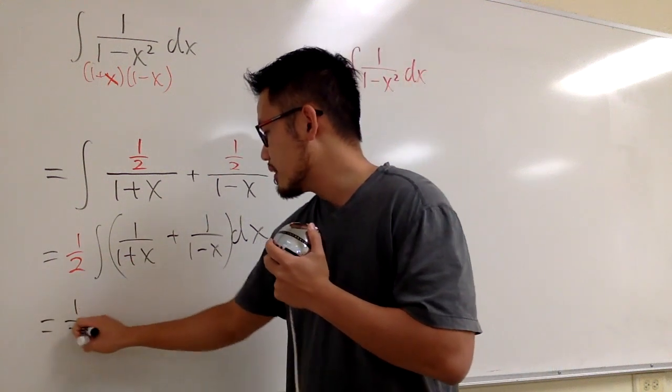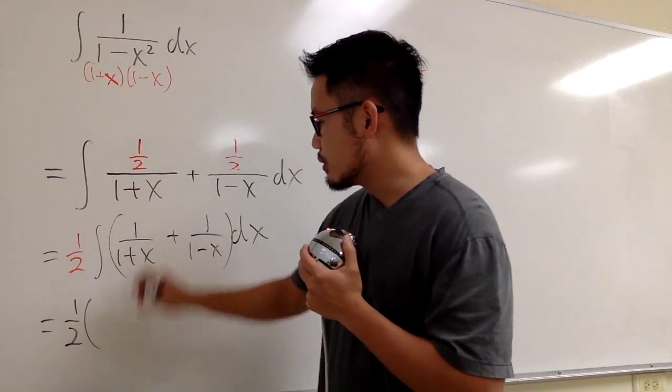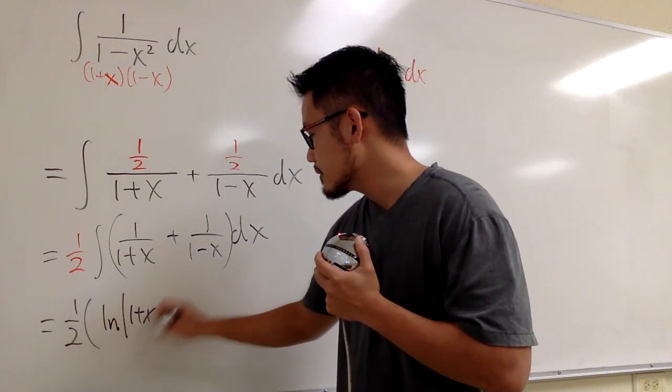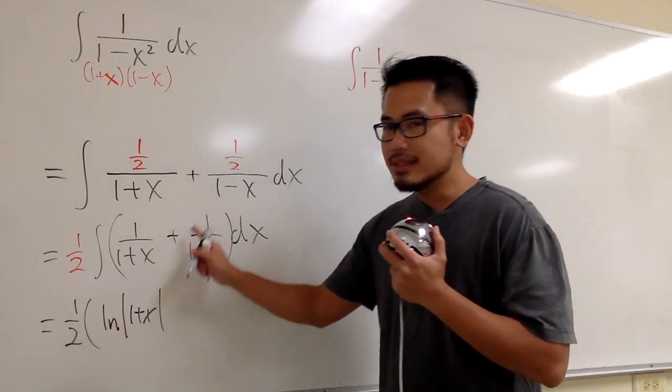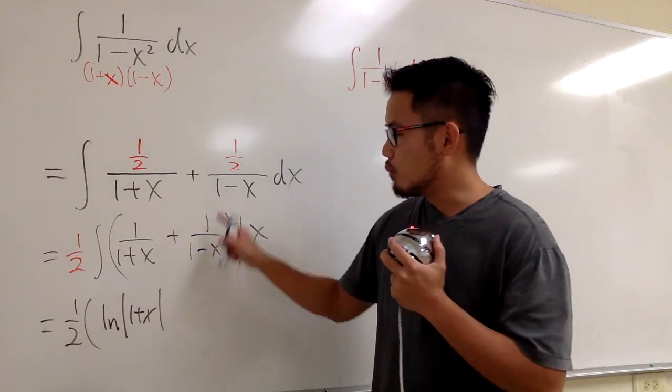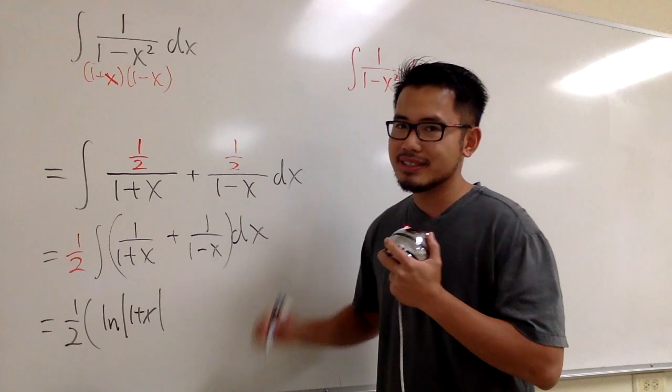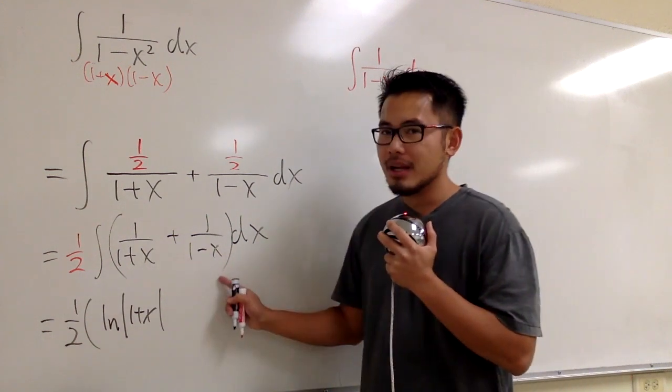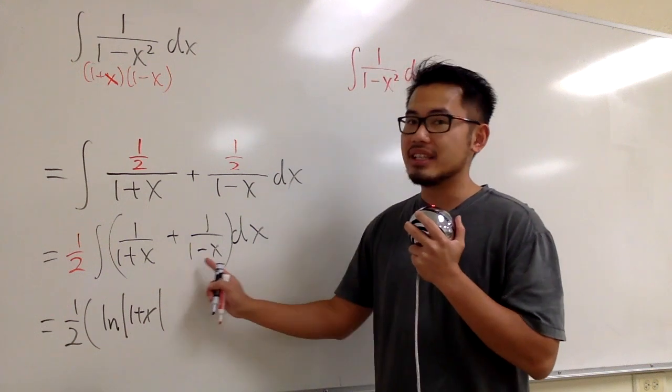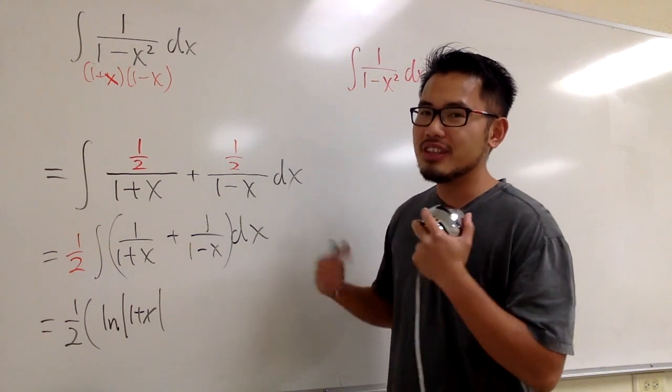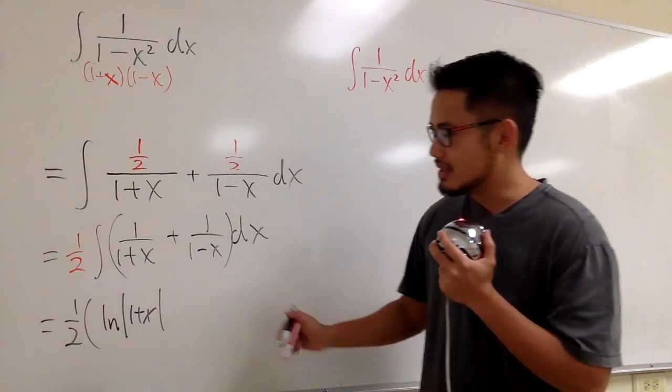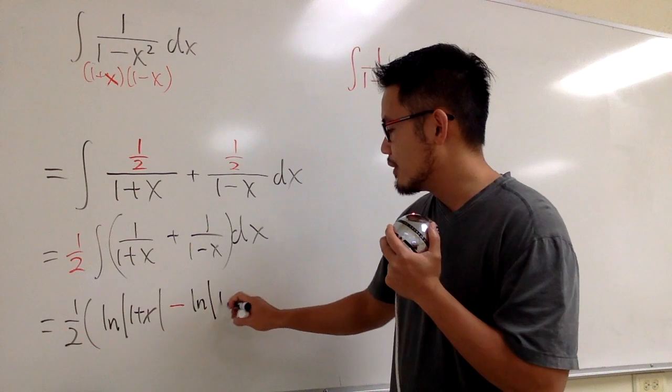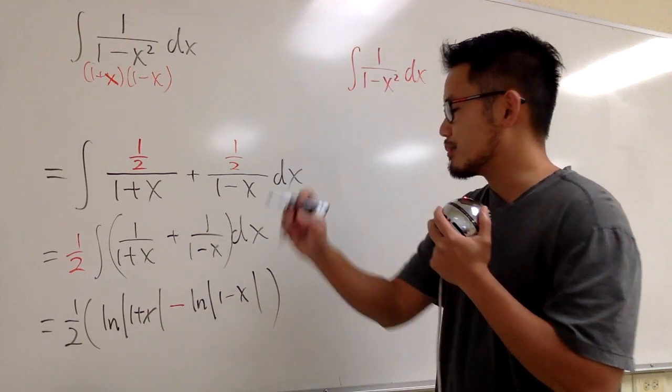So let's go ahead. This is 1 half. For the first one, you know this is going to give us ln absolute value 1 plus x, right? And what's the integral of this? The integral of 1 over 1 minus x. You have to check what's the derivative of the bottom. The derivative of the bottom is negative 1, okay? It's a number negative 1. You have to divide it by that number. So it's actually going to be a minus ln absolute value dot 1 minus x. And then stop the parentheses.